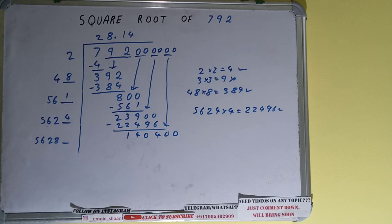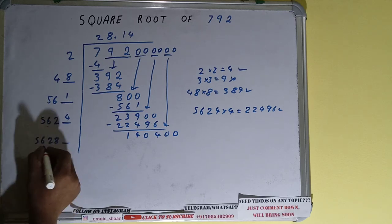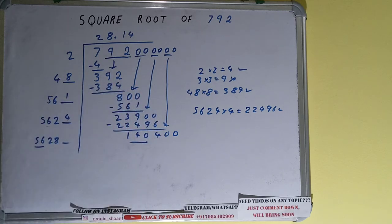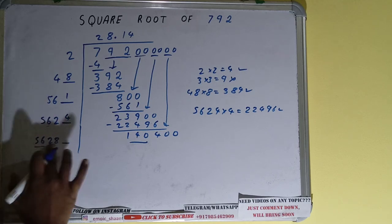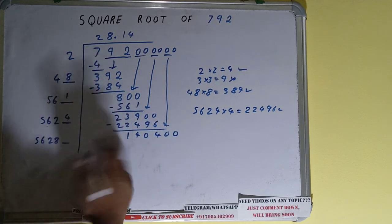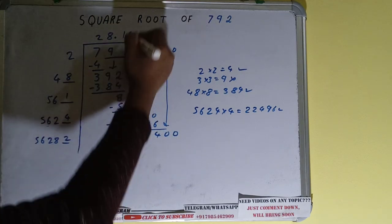Now we can compare this with that. So 56 three times is 168, so we cannot use three times. We have to use two times. Two times will work. So 2 here and 2 here, but we don't need to calculate because we got the answer correct up to three decimal places.